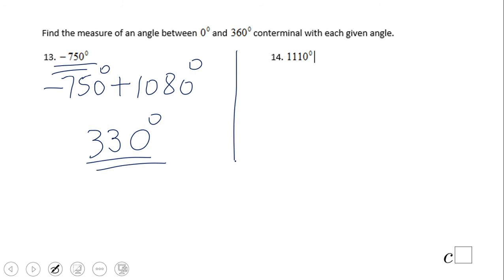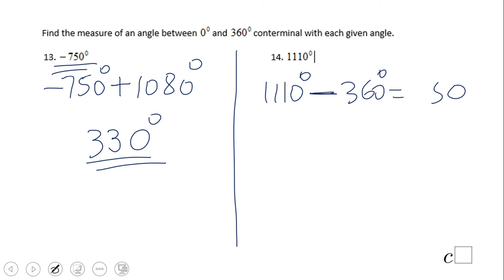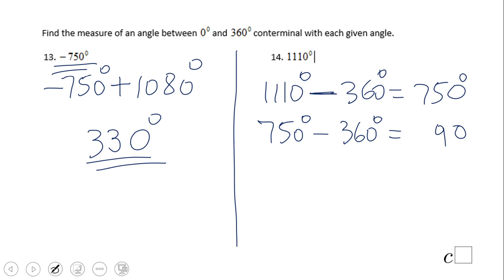For 1110 degrees, we subtract 360 repeatedly. First subtraction gives 750, second gives 390, and subtracting 360 one more time gives 30 degrees. Alternatively, you can subtract a multiple of 360 directly — subtract 360 once to get 750, subtract 360 again to get 390, then subtract 360 again to get 30 degrees.